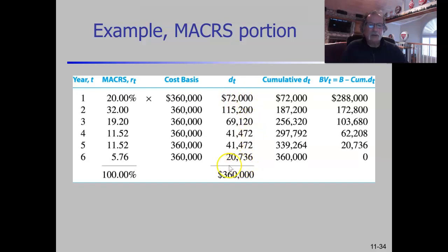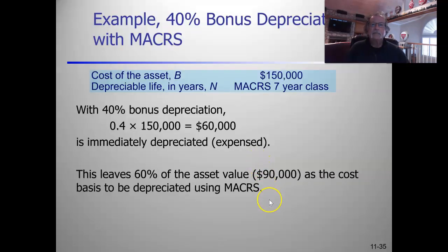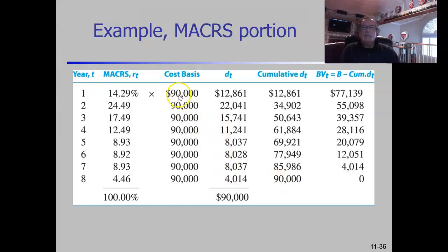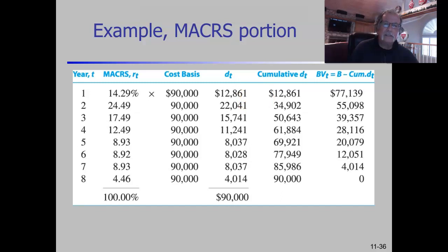Similarly, for a seven-year asset class with a cost basis of $150,000 and 40% bonus depreciation, we write off $60,000 immediately and have $90,000 left to apply the seven-year MACRS percentages to. In year one, the $60,000 bonus plus $12,861 MACRS depreciation gives us $72,861 total depreciation.